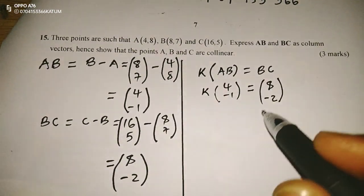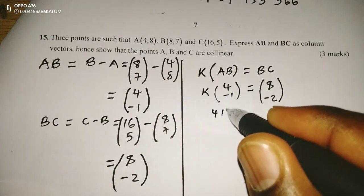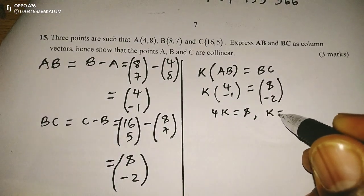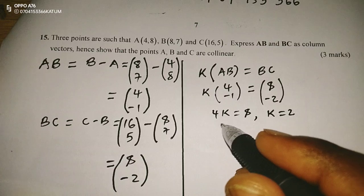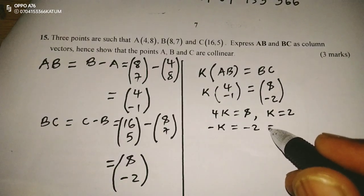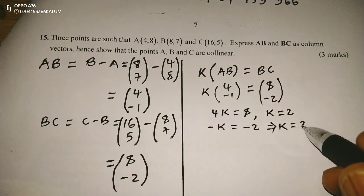Therefore, I can use the x-components, whereby 4k equals 8, and this gives k as 2. Also following the y-components, -k equals -2, meaning that k equals 2.